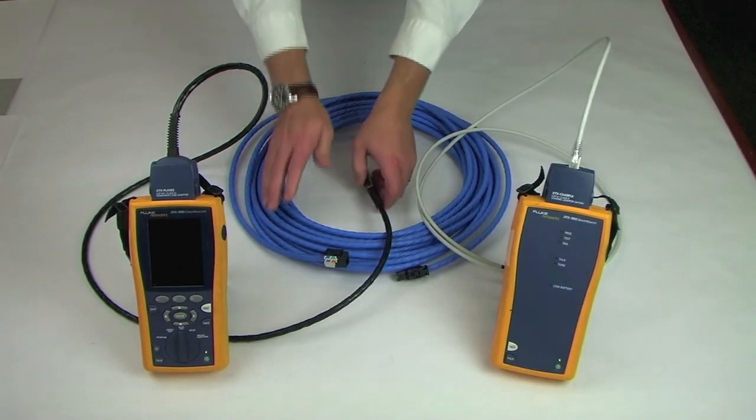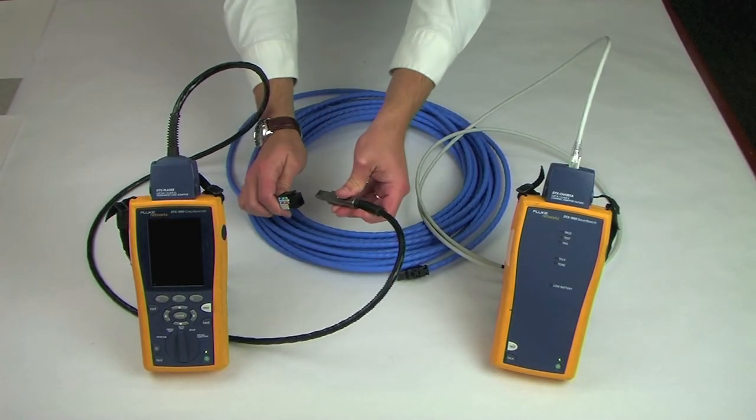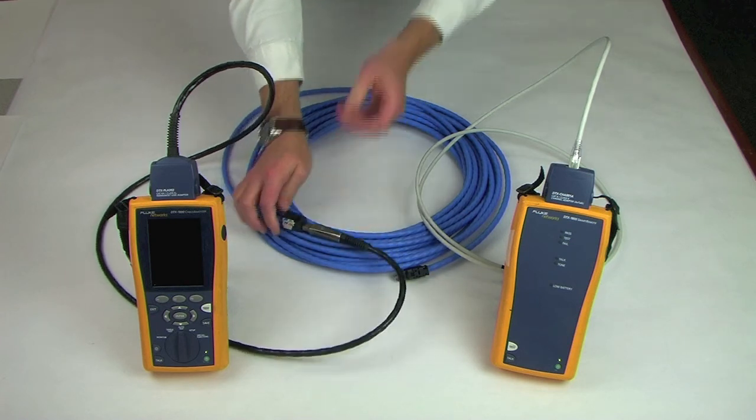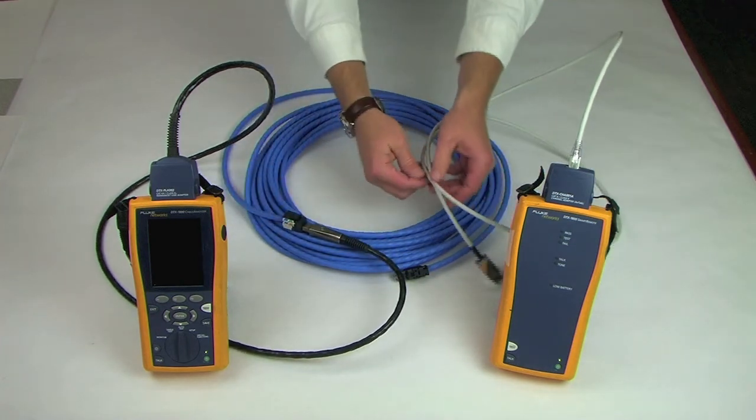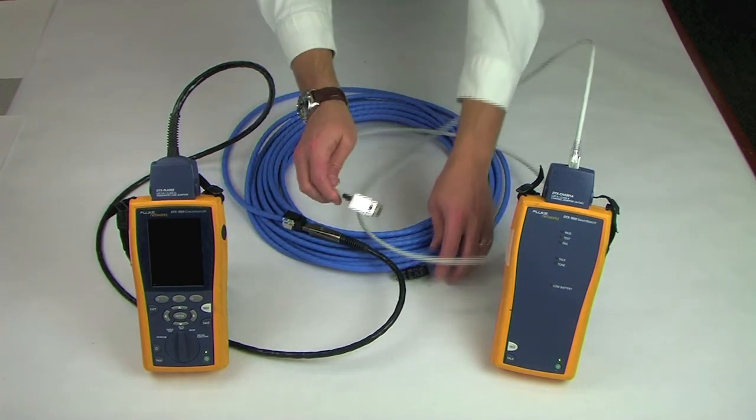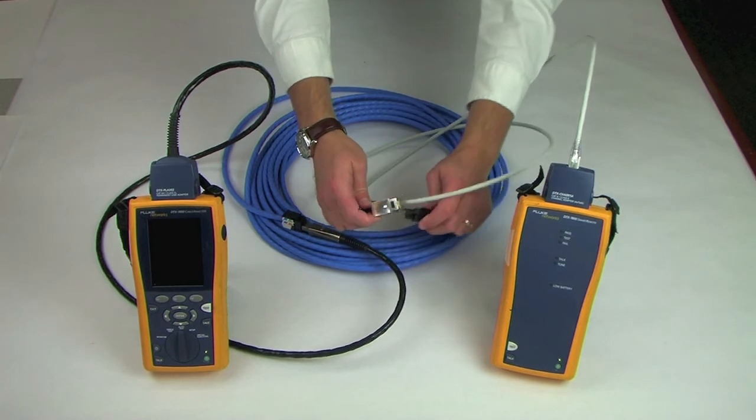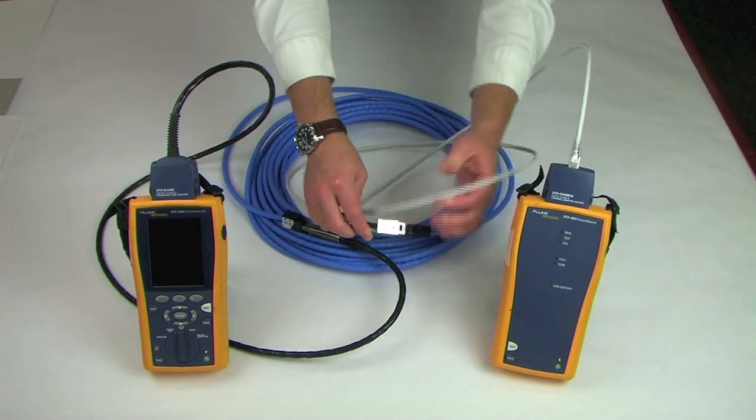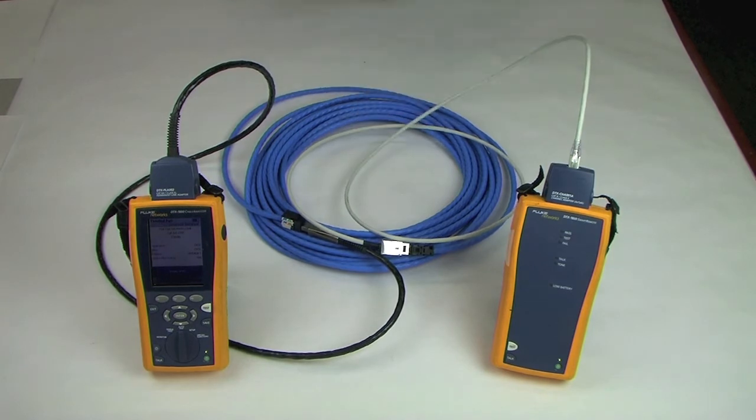Now we will conduct a test of the OCC field-terminable plug in a CAT 6A modified permanent link using the OCC CAT 6A field-plug test adapter. It is important to use the appropriate category-level field-plug test adapter for accurate results.